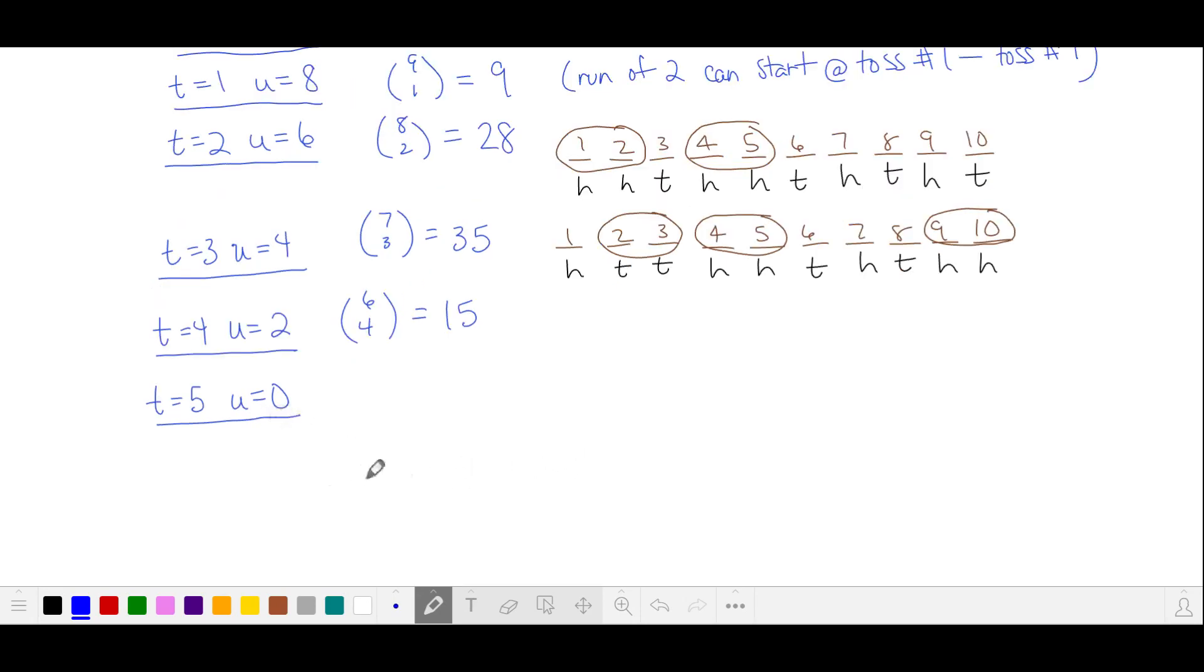Our last case with 10 coin tosses can have as many as 5 runs of 2 and no single runs. Here are 5 runs of 2 and this is what our coin tosses could look like. As always, we're going to multiply by 2 because the heads and tails can be switched.